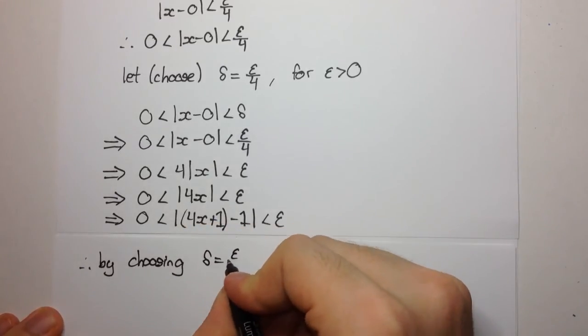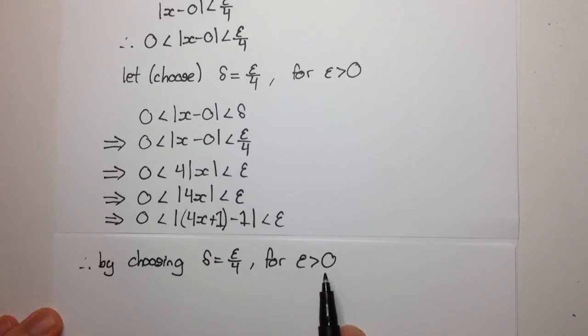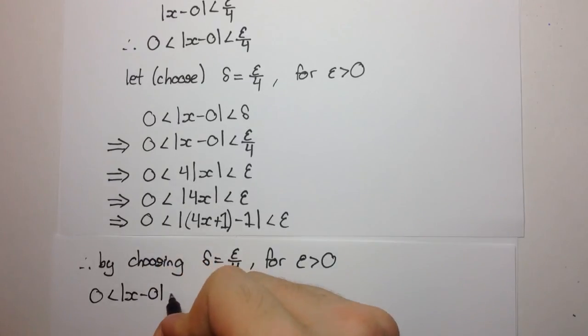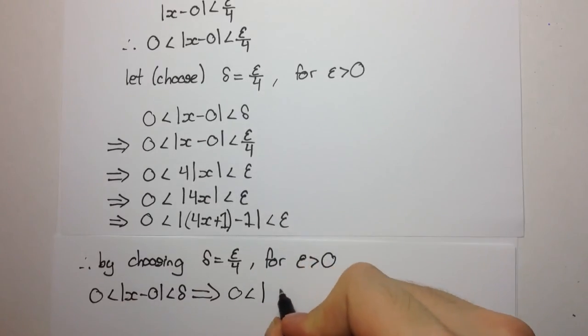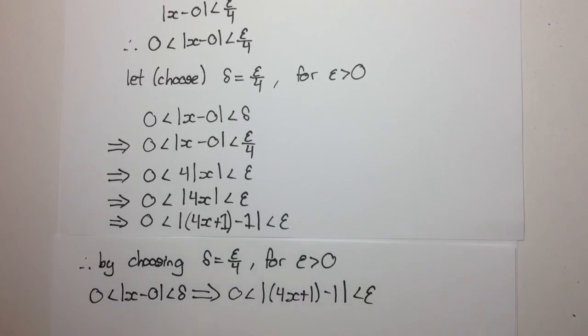So therefore by choosing delta equal to epsilon on 4 for epsilon greater than 0, and this will hold for all epsilon greater than 0. So if someone gives you any value of epsilon that's greater than 0 and you choose your delta to be epsilon on 4 this inequality or this proof will work. So by choosing delta equal to epsilon on 4 we get that this here is implying this here, which is essentially what we wanted to get by the epsilon-delta definition.